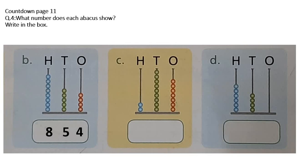Part C: you will again count these beads. How many hundreds? 2 hundreds. Write 2. Count beads in tens: 1, 2, 3, 4, 5, 6, 7, 8, 9: write 9 in tens. In ones, how many beads? 1, 2, 3, 4, 5, 6, 7: write 7.